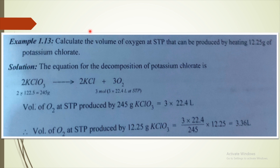Next question: calculate the volume of oxygen at STP that can be produced by heating 12.25 grams of potassium chlorate.